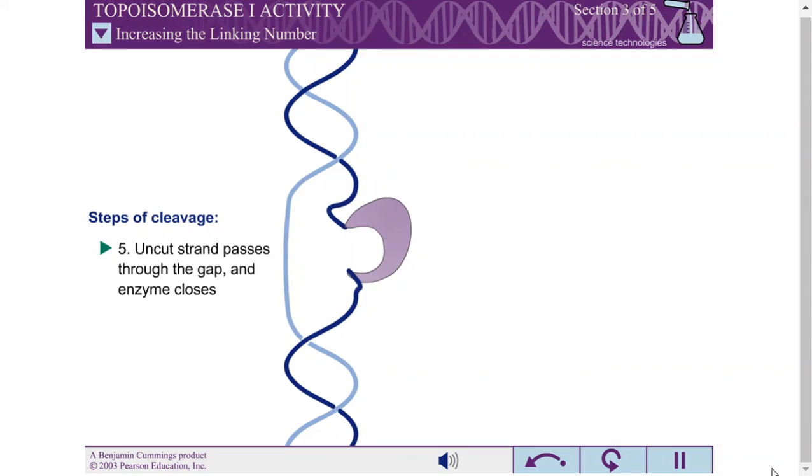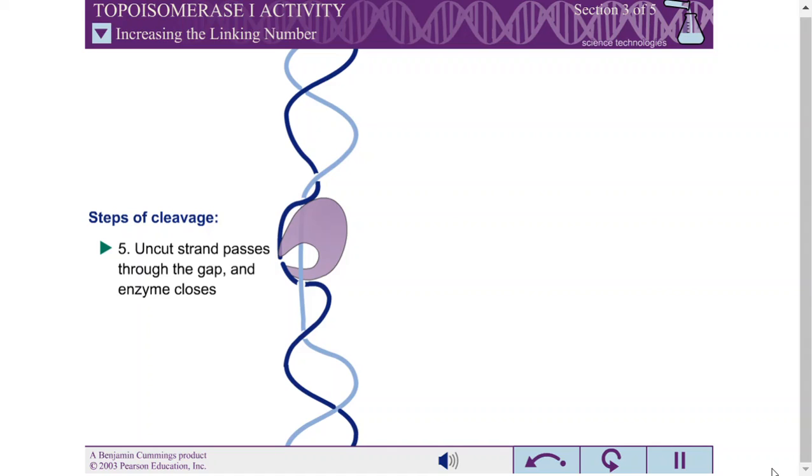The uncut strand then passes through the gap, binding to a pocket in the middle of the enzyme. Binding this strand causes the topoisomerase to change conformation again, closing the gap in the nicked strand.